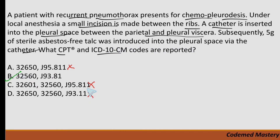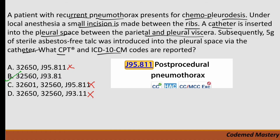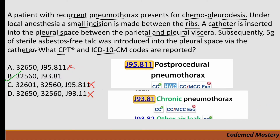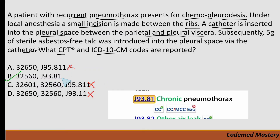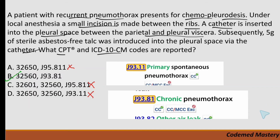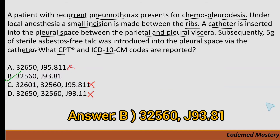For the ICD code, J95.811 is for post-procedural pneumothorax — this is not a post-procedural case, so we eliminate options containing it. J93.81 is for chronic pneumothorax and J93.11 is for primary spontaneous pneumothorax. According to the question, the correct ICD code is J93.81 for chronic pneumothorax. Therefore, option B with codes 32560 and J93.81 is the right answer.